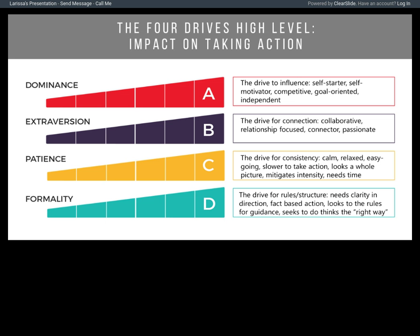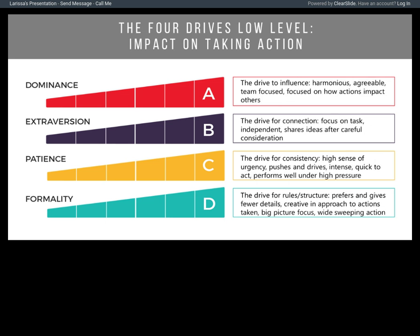Next, we look at how lower levels of each drive impact action-taking. Lower levels of dominance manifest as harmonious, agreeable, and team-focused. They really want to focus on how actions impact others — it's more about the relationship side. It doesn't necessarily need to be my idea; I may look to others for what the action steps need to be, looking at the whole picture because I'm more harmonious and less competitive.